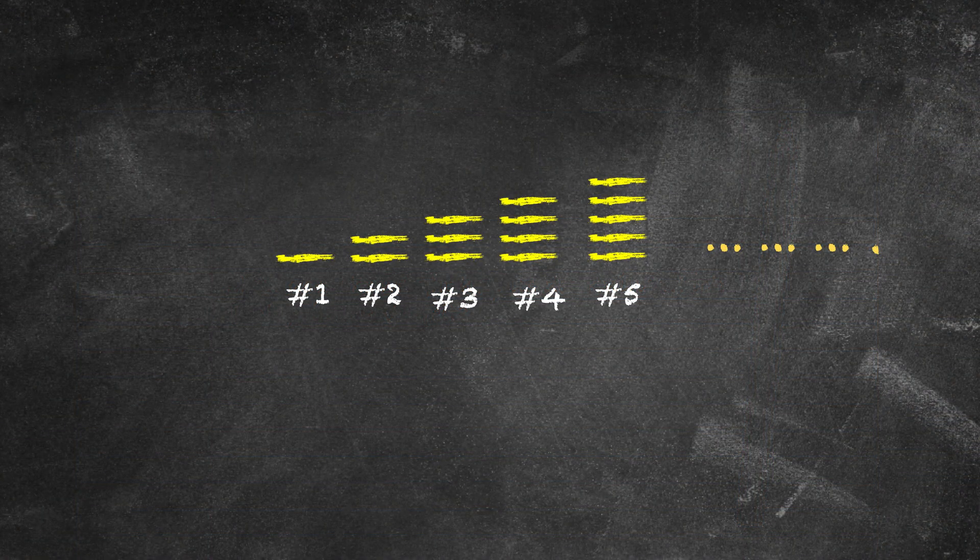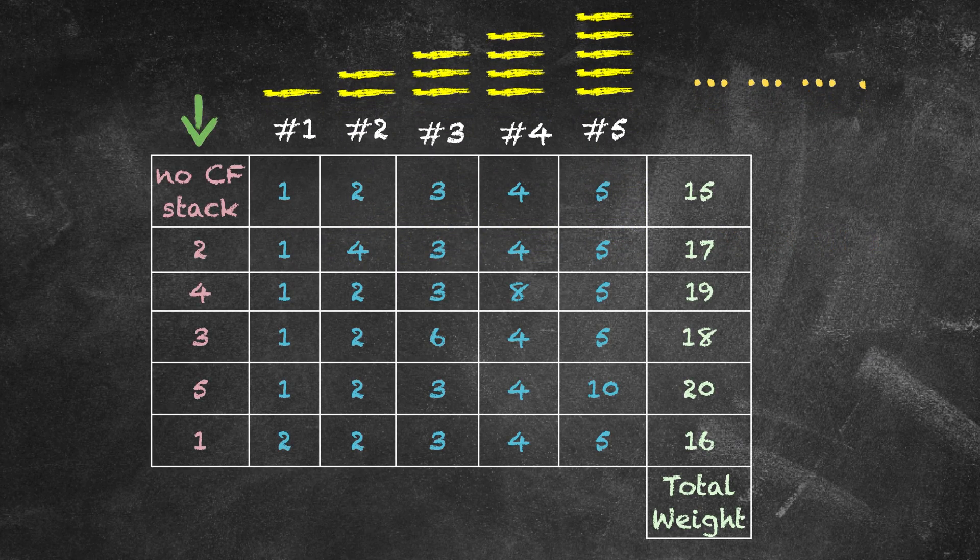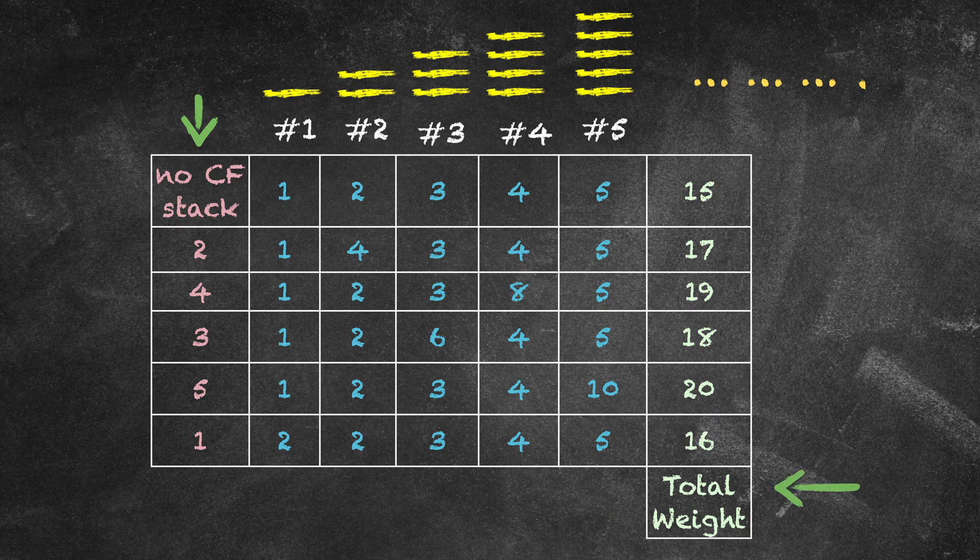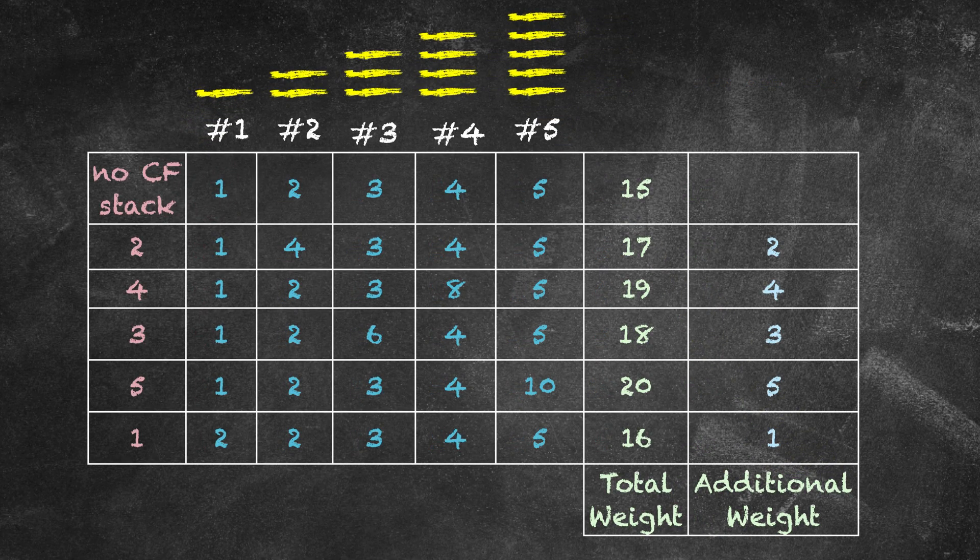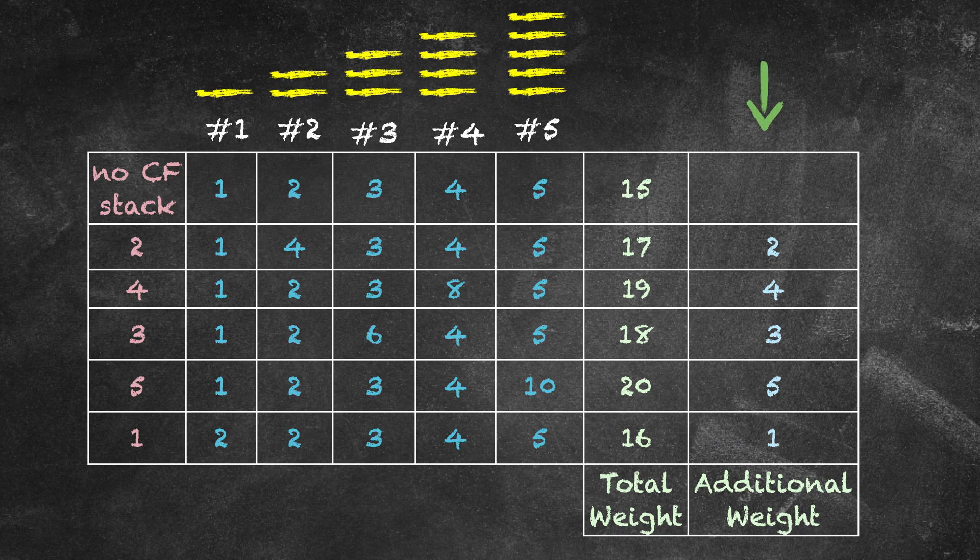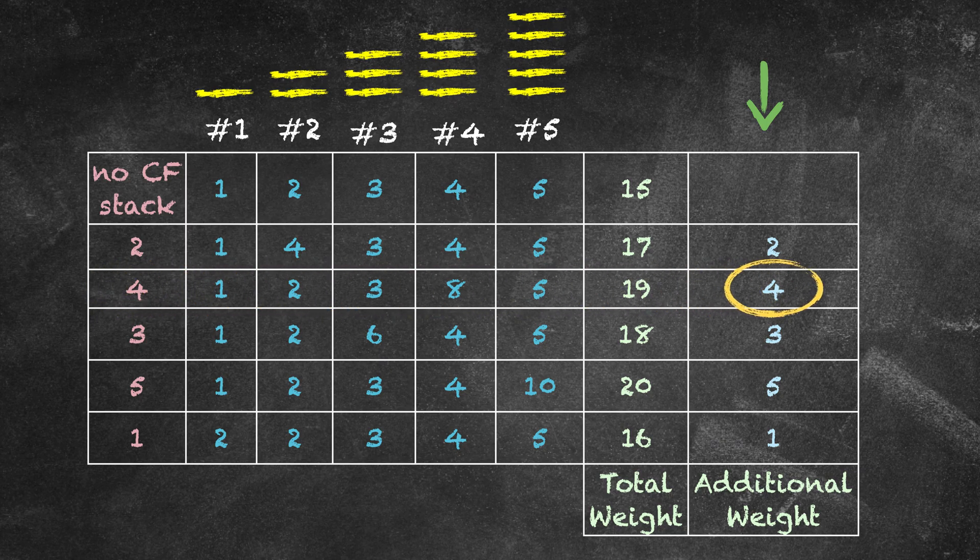To see that, we run again a numerical experiment. We assume in this column the counterfeit number and we calculate the total weight of the first five stacks on the basis of this assumption. Let's explore more in detail the table to seek out a pattern. I have included a column showing the additional weight and you do not need to add the genuine weight. When you do it, you still obtain the same result. So can you spot the pattern in here? If we assume the counterfeit to be the number two, then the additional weight is two. If we assume the counterfeit to be the number four, then the additional weight is also four and so on. In other words, which stack is counterfeit seems to be determined by the additional weight. Does it hold true for every natural number?